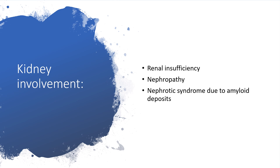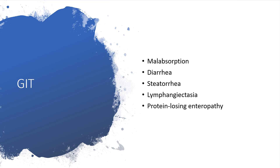When the kidney is involved, we may be dealing with nephropathy and nephrotic syndrome due to amyloid deposits. When the gastrointestinal system is involved, we may be dealing with malabsorption, which could lead to diarrhea and steatorrhea because we're going to have incomplete digestion of fats. There can also be telangiectasia and protein-losing enteropathy.